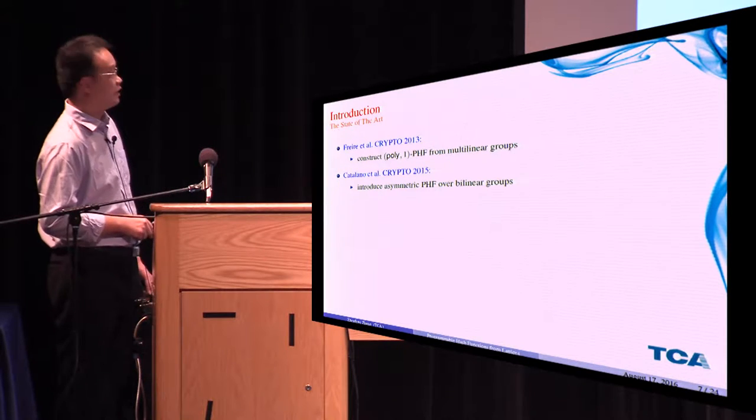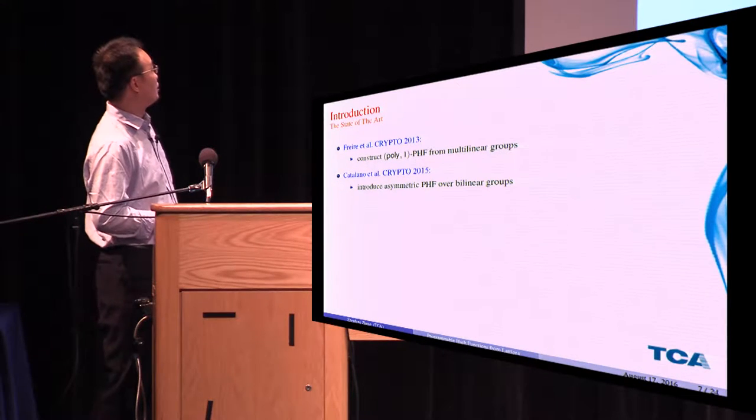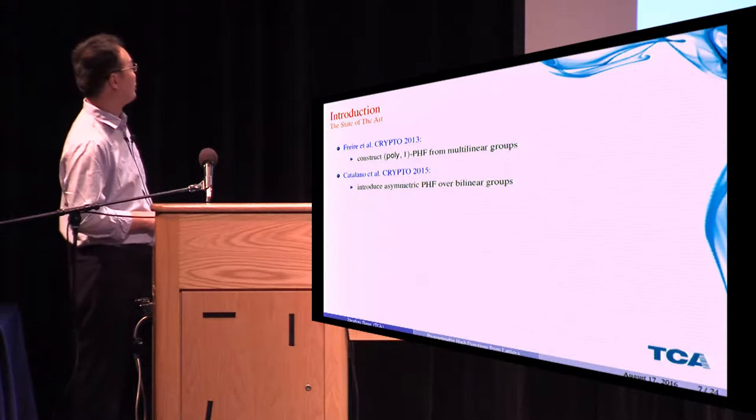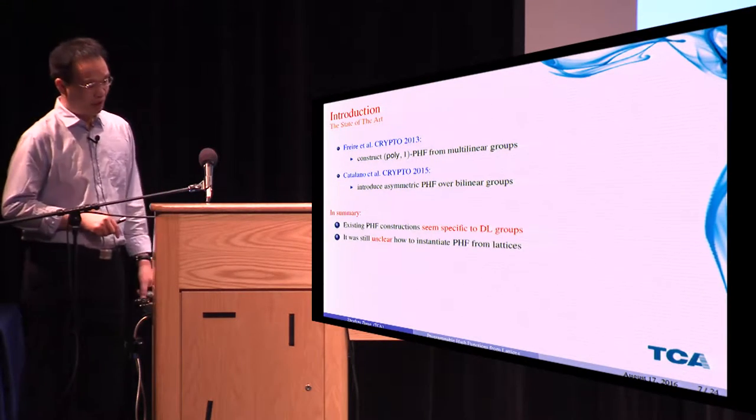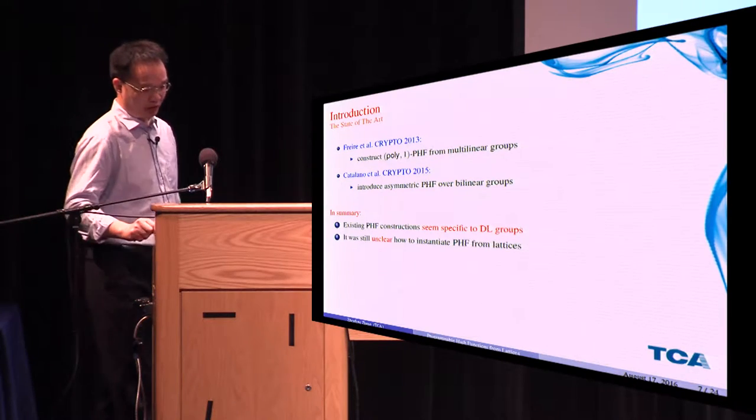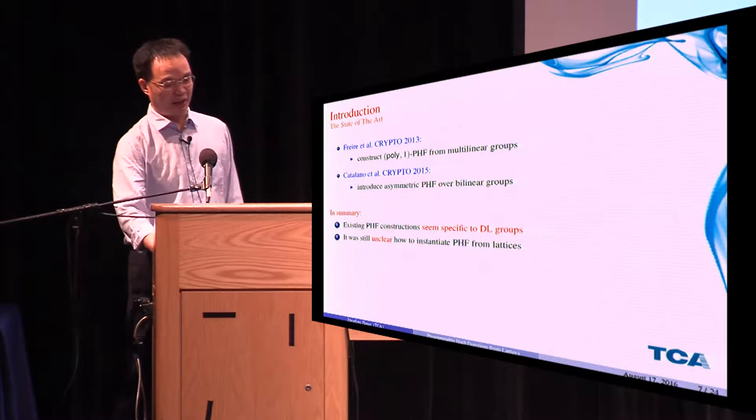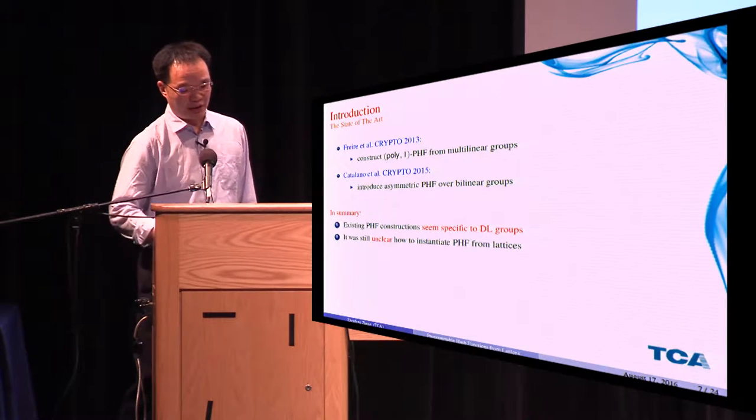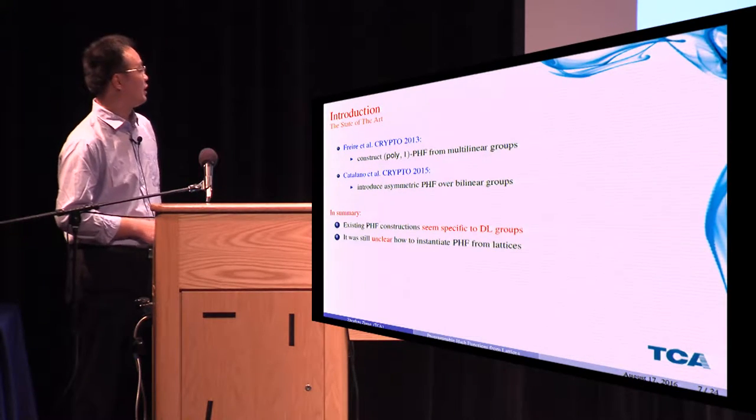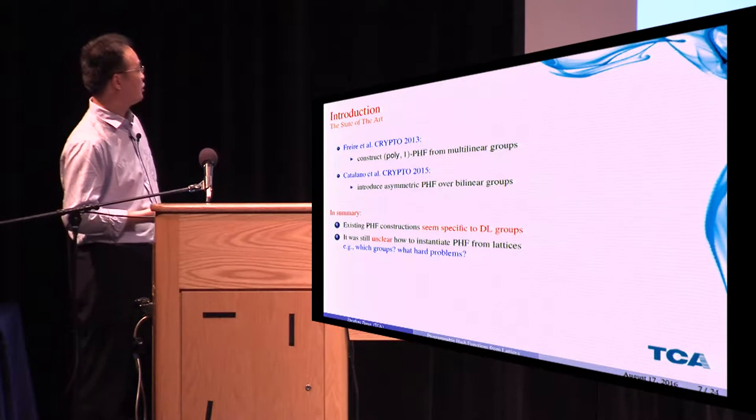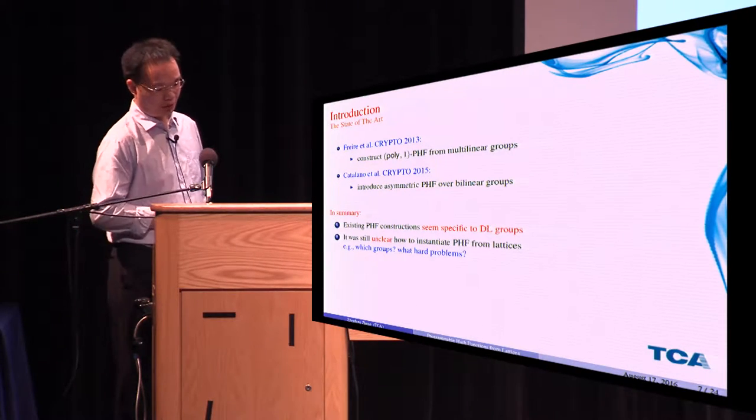And in Crypto 2012, Hannaka showed that it is impossible to construct an algebraic (U,1)-PHF over prime order groups in a black-box way, such that its key has less than U group elements. And in Crypto 2013, Freire constructed a (poly,1)-PHF from multilinear groups. And in Crypto last year, Catalano introduced a symmetric PHF over bilinear groups. In summary, existing PHF constructions seemed specific to DL groups, and it was still unclear how to construct PHF from lattice, for example with which groups and with which hard problems.